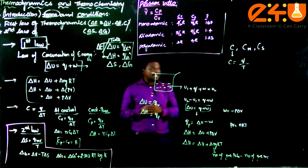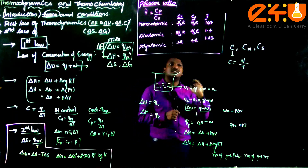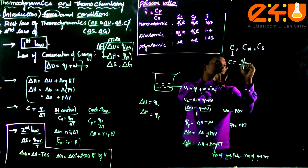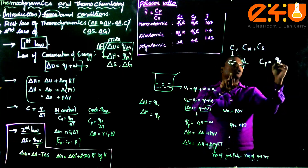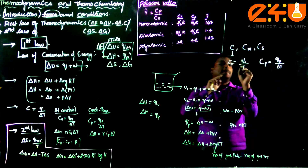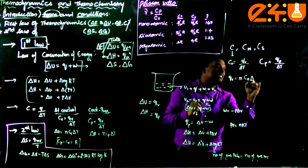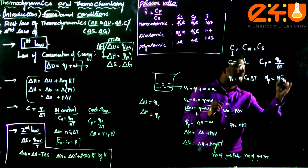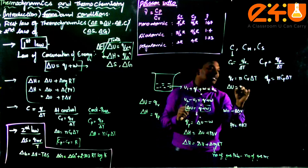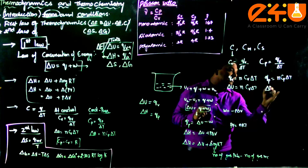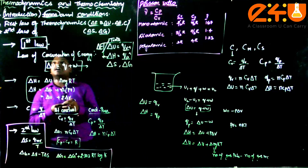Heat capacity is defined as the amount of energy required to increase the temperature of the system by one degree Celsius. At constant volume: Cv = qv/ΔT. At constant pressure: Cp = qp/ΔT. For n moles: qv = nCvΔT and qp = nCpΔT. Since constant volume means internal energy: ΔU = nCvΔT, and ΔH = nCpΔT.